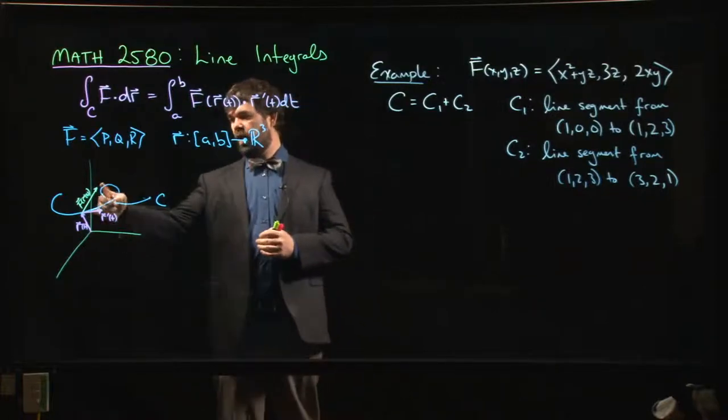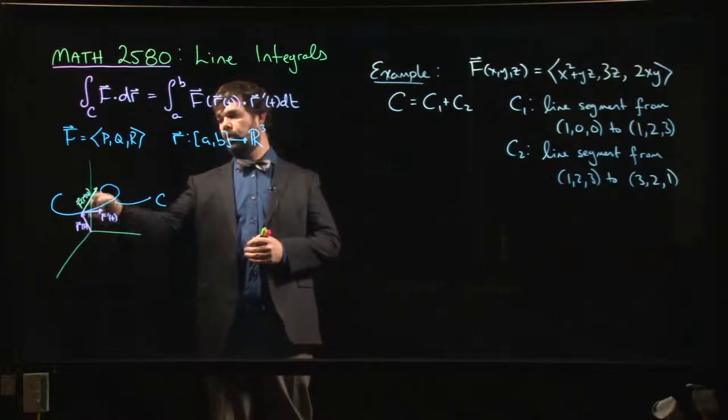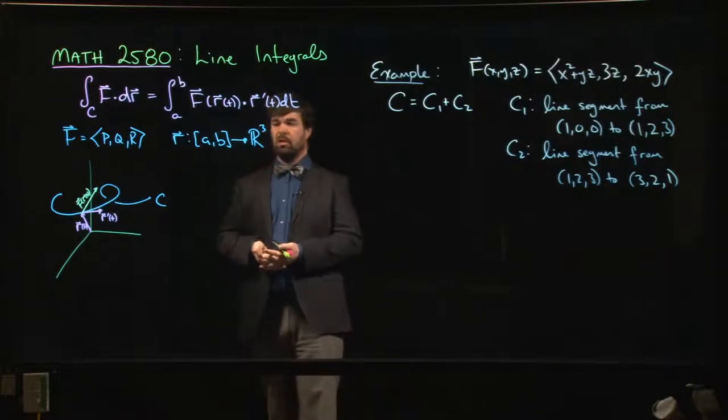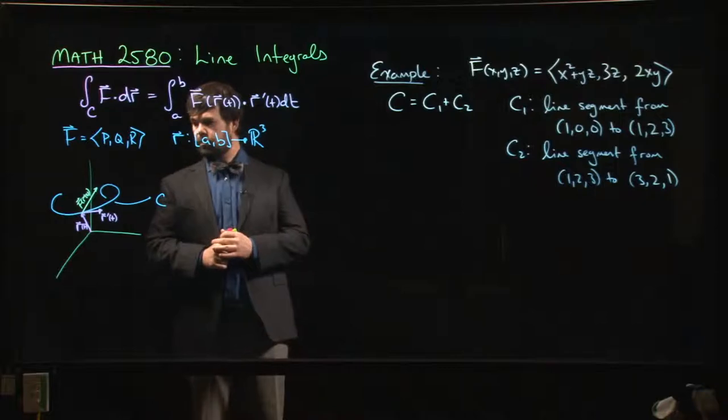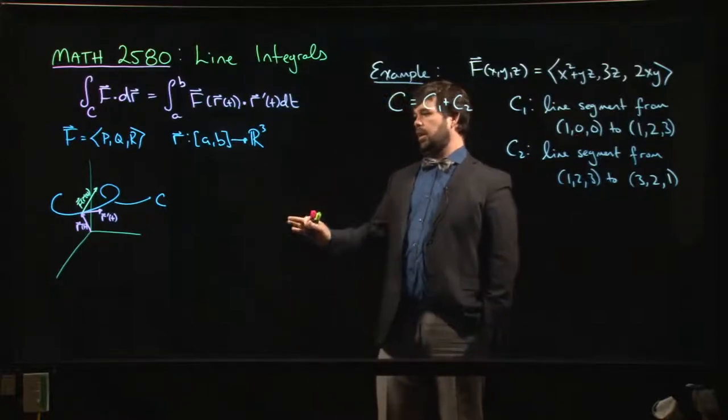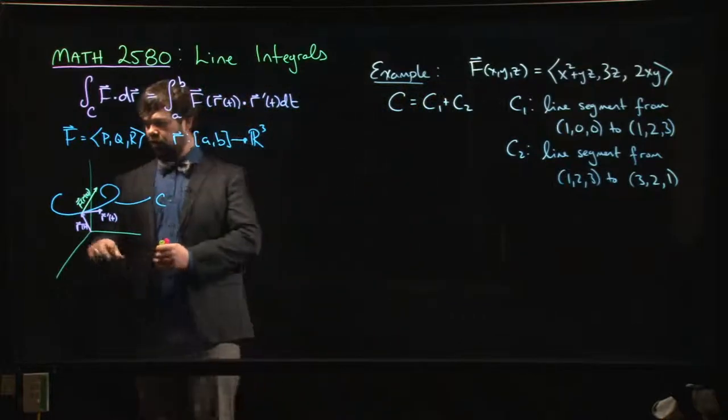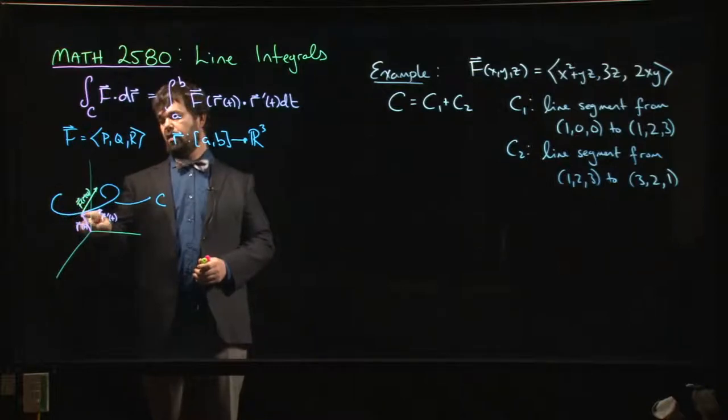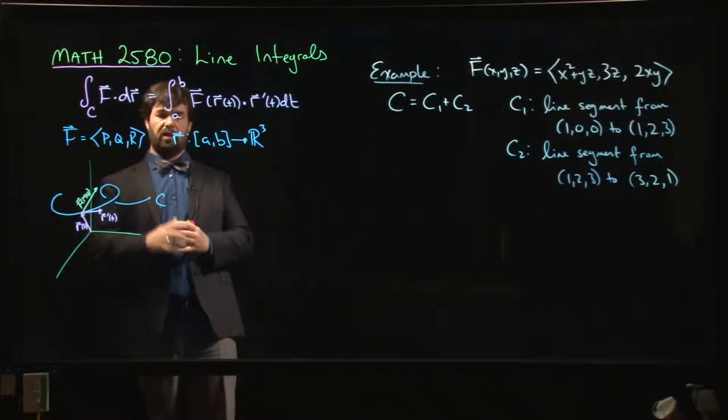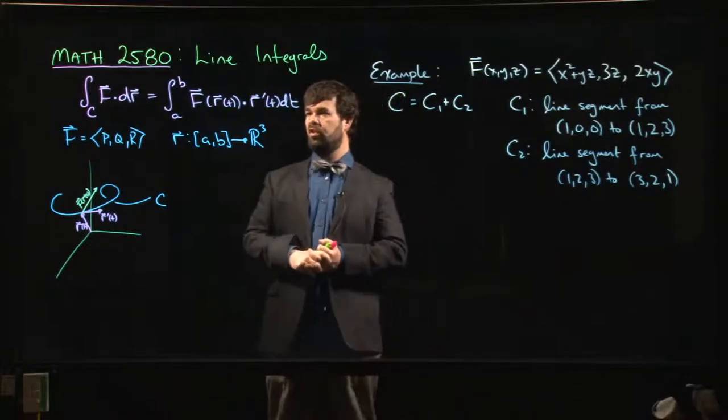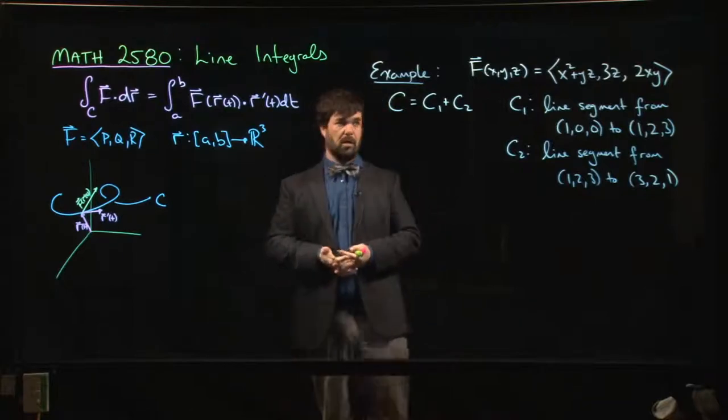So the picture looks something like this: you've got your curve in space. R is the position vector for a point on the curve, R prime is the tangent vector to the curve, and the vector field F could be pointing in any particular direction at any point along the curve. What you're interested in is how much of the vector field is pointing in the direction of the curve, so we do that by computing the dot product with R prime. The motivation here is this concept of work coming from physics—we want to compute the work done by a force as it moves an object along some path.